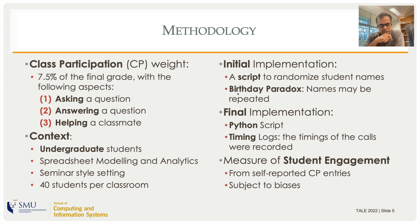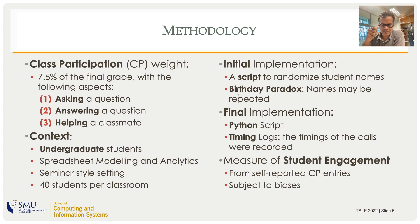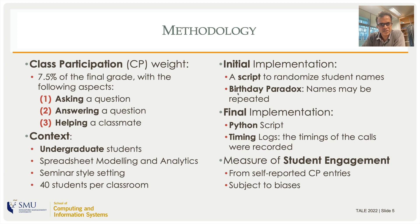In the initial implementation of this method, we had a shell script that would pick out a student at random from the class list, but this suffered from the birthday paradox problem, which means a student's name can be called consecutively with no mechanism to prevent that. With the final implementation, we took care of that problem and wrote a more extensive Python script. It also recorded the timings of the calls, and all we needed was a measure of student engagement, which came from the self-reported class participation entries.